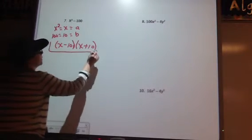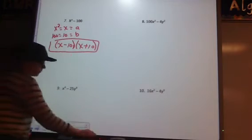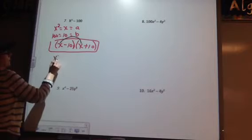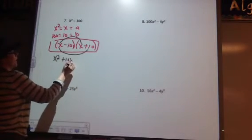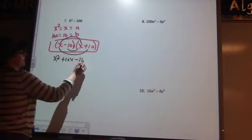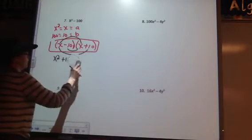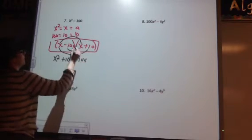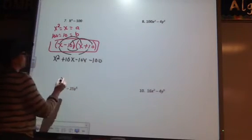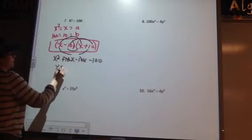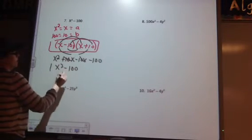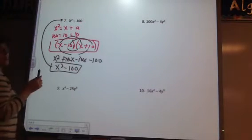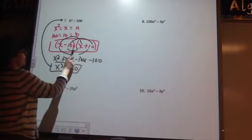Okay, so when I factor that, this should be my answer, but let's double check and FOIL it. So we have x squared, positive 10x, negative 10x, and then we have negative 100. These cancel out, so I have x squared minus 100, and that's what we started with. So when I factor this, difference of squares, right here's my answer.